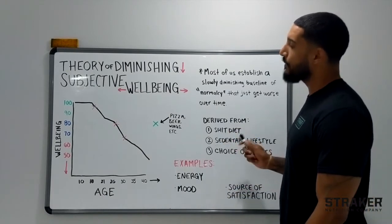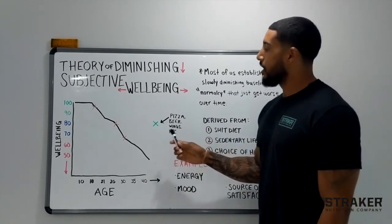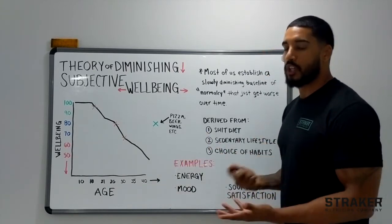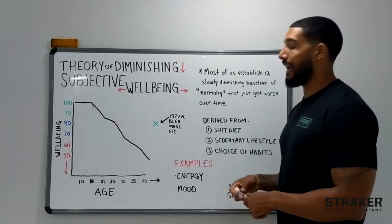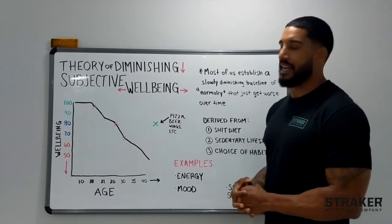So what I have here is pizza, beer, wings, et cetera. So when you talk to people about their diet and improving their diet, something people say is, well, I could never give up pizza. I could never give up beer. I could never give up wings.